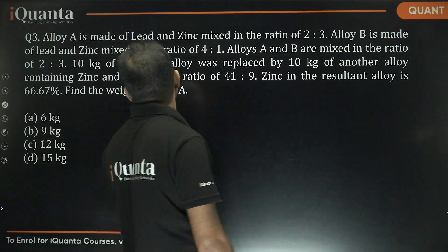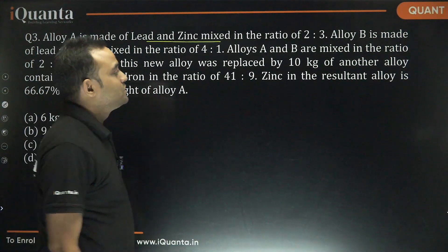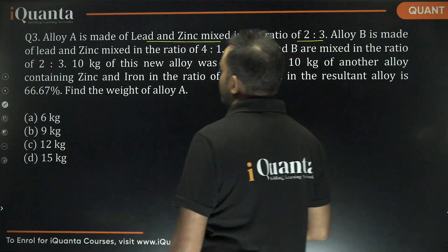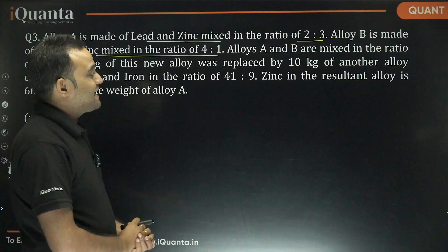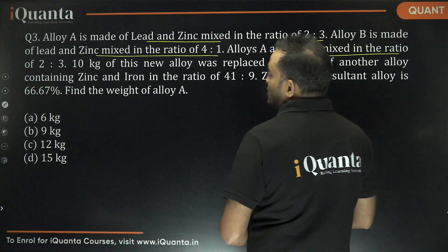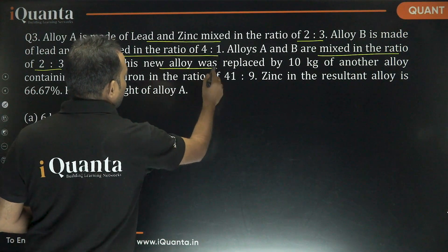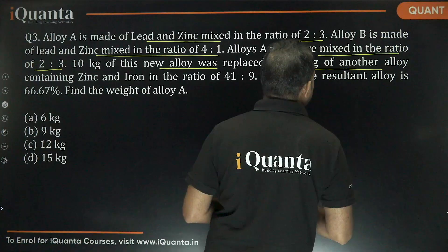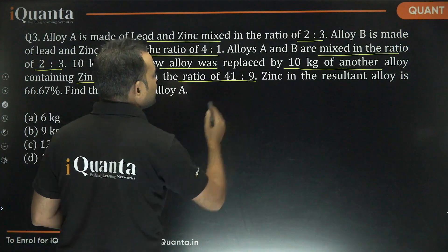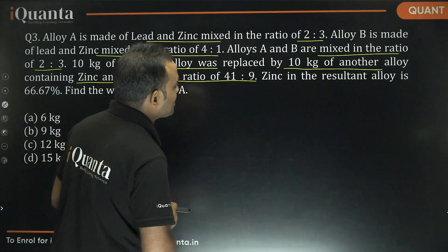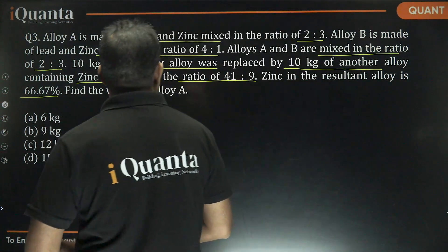The next question: Alloy A is made of lead and zinc mixed in the ratio 2 to 3. Alloy B is made of lead and zinc mixed in the ratio 4 to 1. Alloys A and B are mixed in the ratio 2 to 3. Then 10 kg of this new alloy is replaced by 10 kg of another alloy C containing zinc and iron in the ratio 41 to 9. Zinc in the resultant alloy is 66.67%. Find the weight of alloy A.